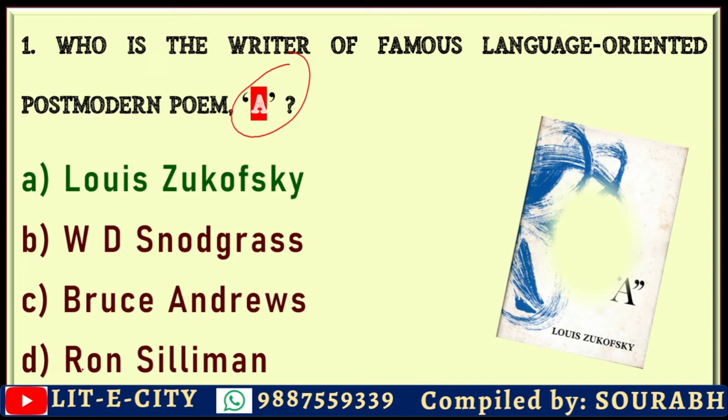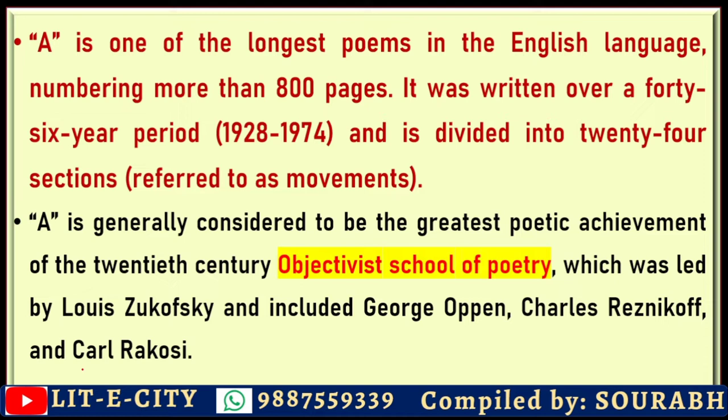It was a child of long labor — he worked on this poem for a long time. As you can see in this infographic, 'A' is one of the longest poems in the English language. It has more than 800 pages, written over a 46-year period. He started in 1928 and finished in 1974.